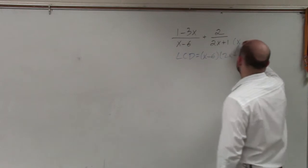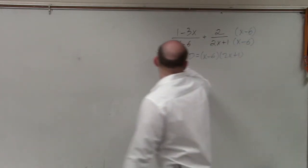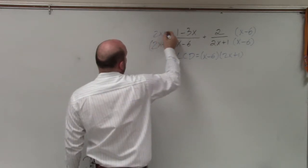So now we have to multiply x minus 6 times x minus 6. And then over here, I have to multiply by 2x plus 1 over 2x plus 1.